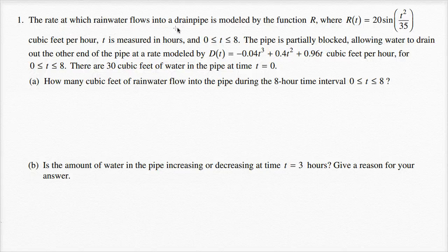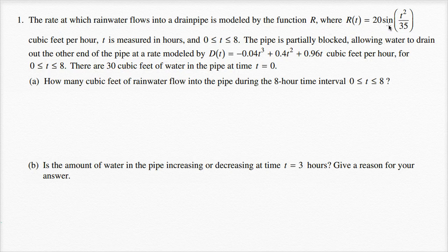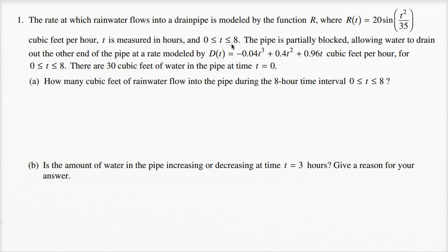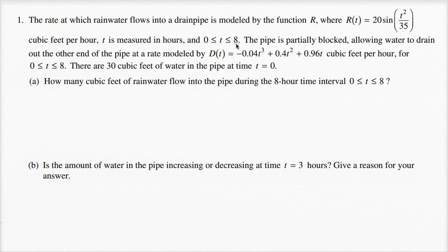The rate at which rainwater flows into a drainpipe is modeled by the function R, where R(t) equals 20 sine of t squared over 35 cubic feet per hour. t is measured in hours, and zero is less than or equal to t which is less than or equal to eight, so t is going to go between zero and eight.